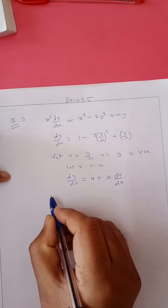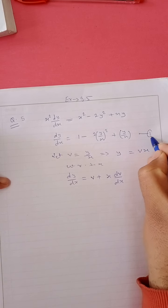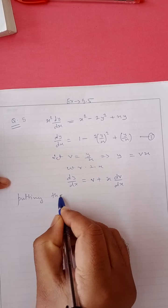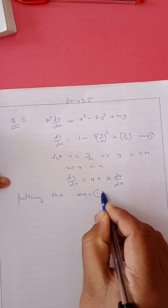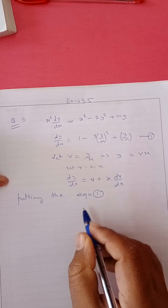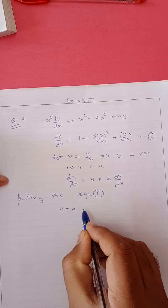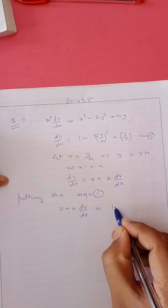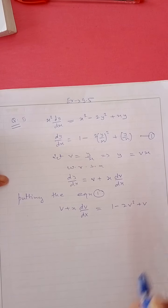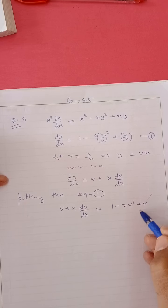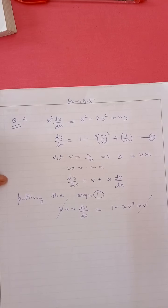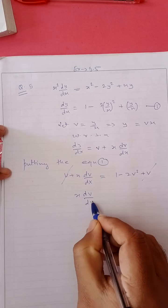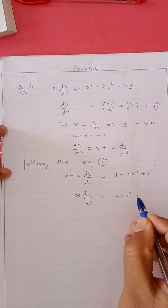इन दोनों की values equation में put करते हैं। तो v + x·dv/dx = 1 - 2v² + v। v से v cancel। x से: dv/dx = 1 - 2v².